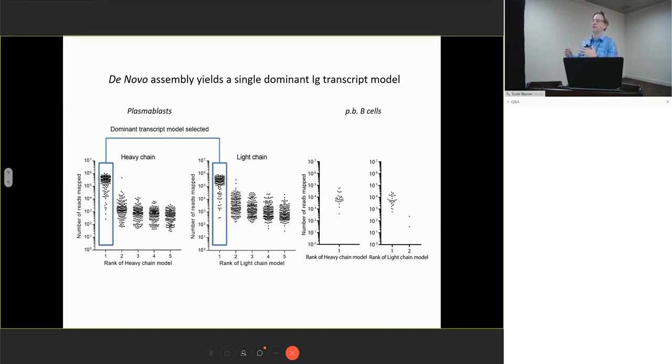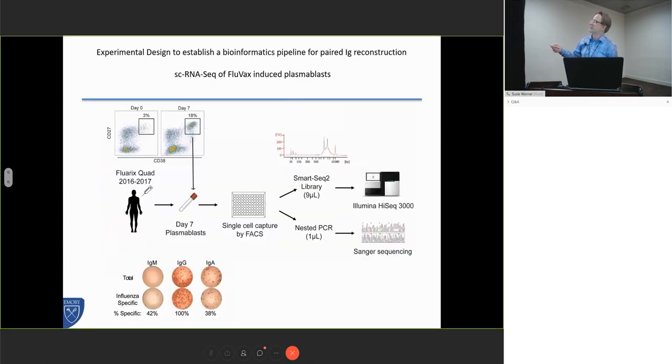I'm going to skip a lot of the slides in the interest of time, but what we came up with was that when we do this and we use de novo reconstruction and various different filtering methods and metrics, we get multiple models of our heavy and light chain. Each column here, each dot is a single—the expression of a single reconstructed heavy chain, and then in the second column is the runner-up from the same cell, and so on.